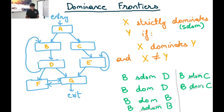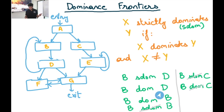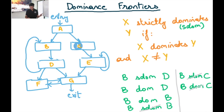In this example, B strictly dominates D. B does not strictly dominate itself because B dominates itself but not strictly. I'm also going to use SDOM with a strikethrough to denote "not strictly dominates." So B does not strictly dominate B. Similarly, B does not strictly dominate C because B does not even dominate C. This strictly dominates relation is what's being used in the definition of dominance frontier.